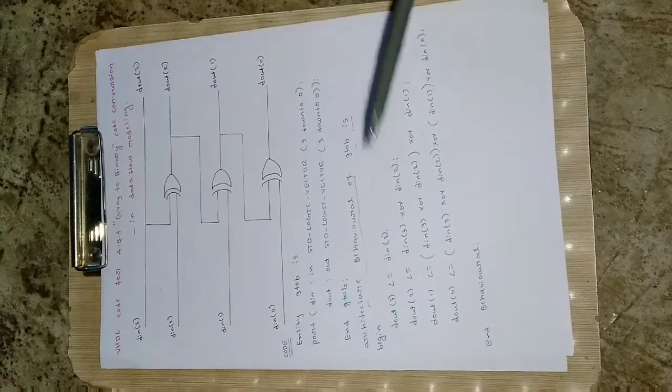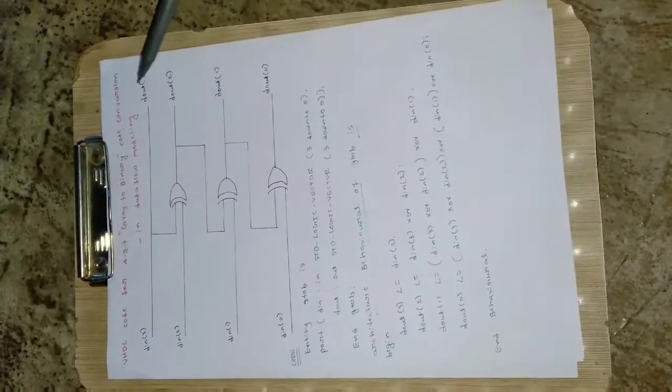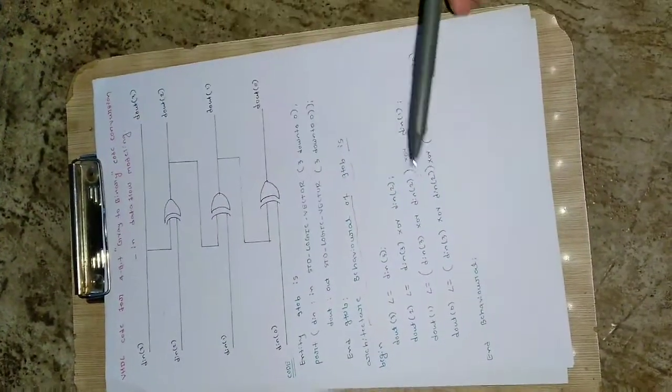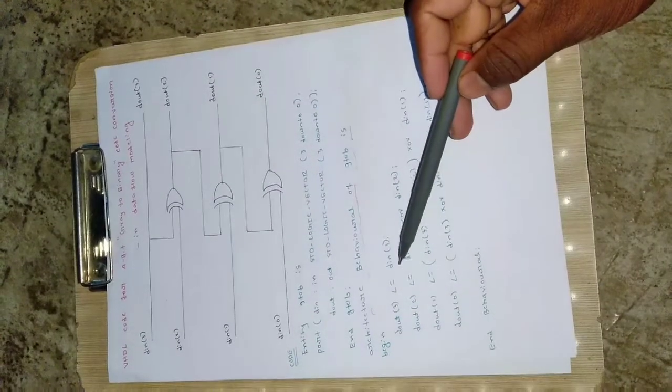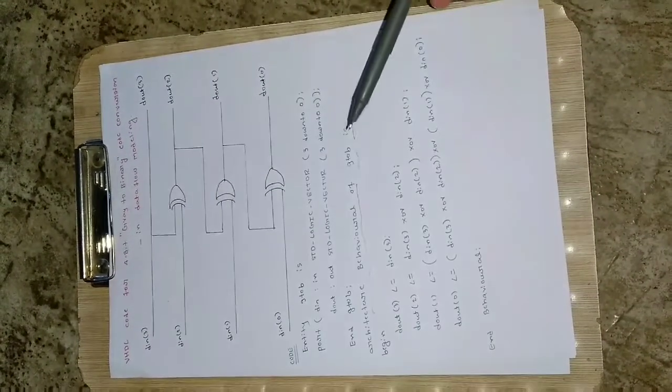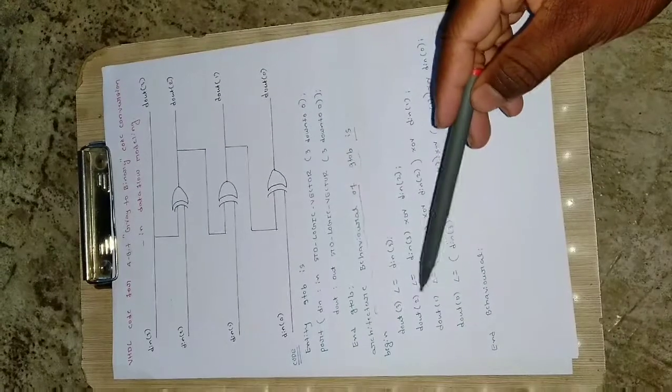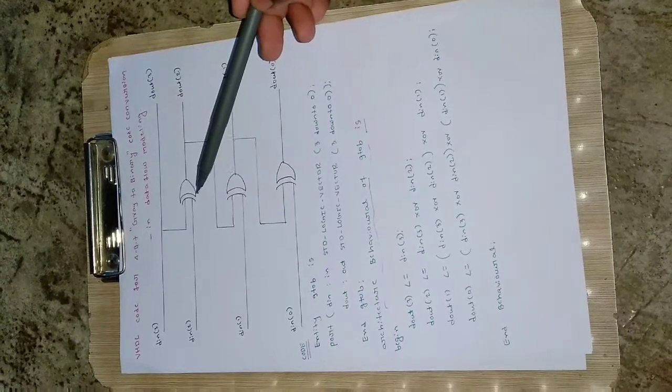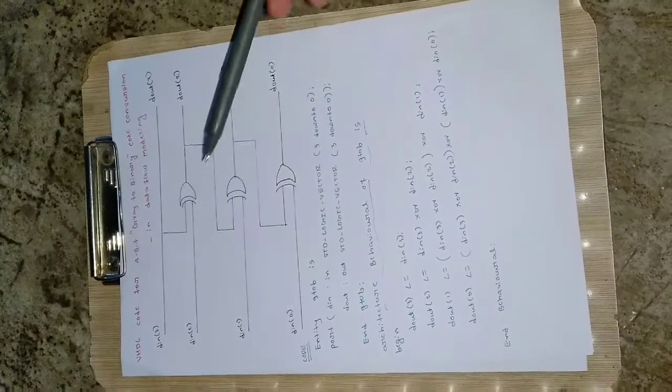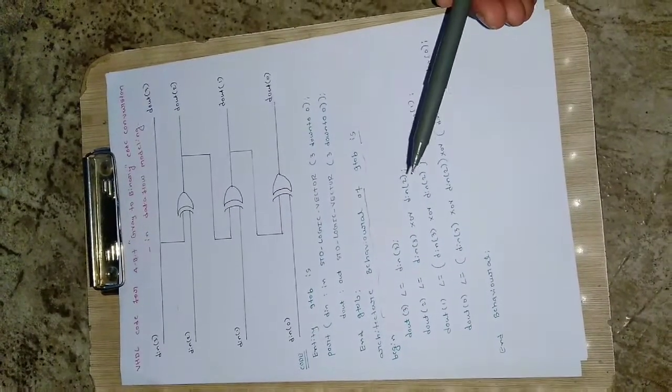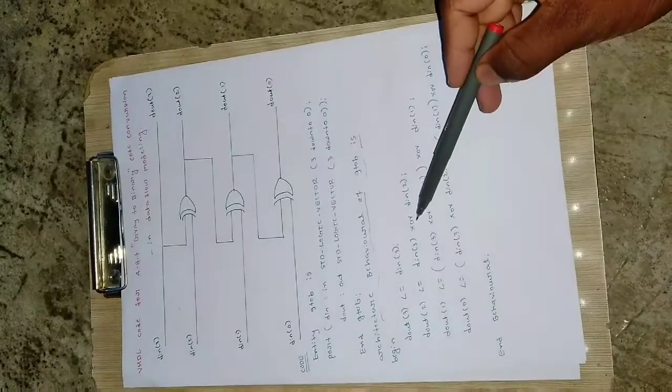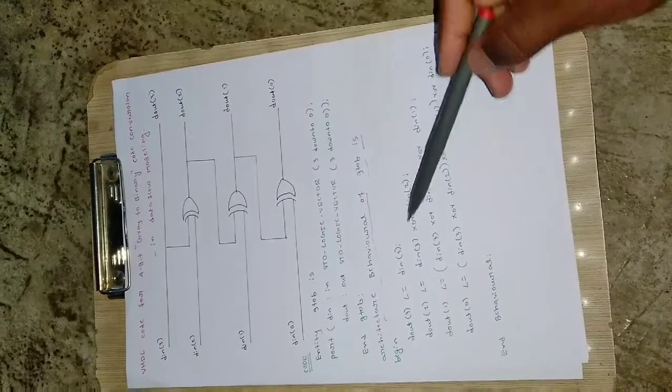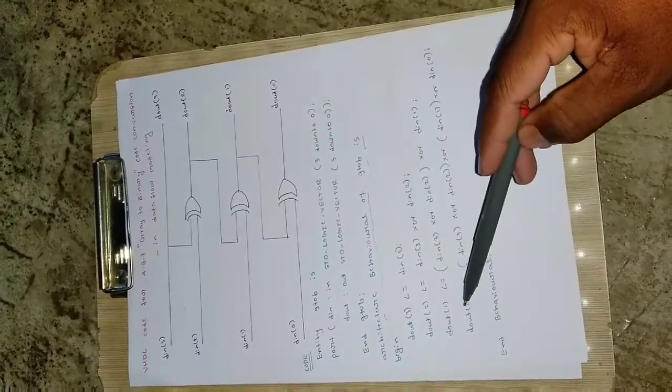For this behavioral we will be having a begin. Now it's time to implement this code. D out of 3 will be assigned with D in of 3 because it is a straight line, no gate is involved. Then D out of 2, it is having one input as D in of 3 and its second input is D in of 2, so they are XORed together.